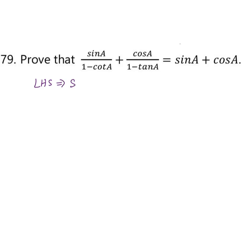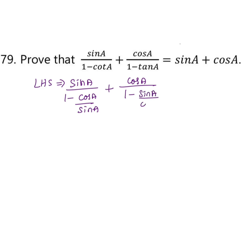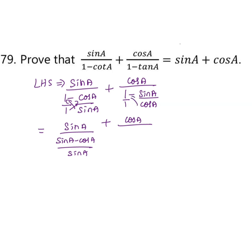LHS equals sin A divided by (1 minus cot A). We can write cot A as cos A divided by sin A, then plus cos A divided by (1 minus tan A), where tan A can be written as sin A divided by cos A. Taking LCM and cross multiplying, it becomes sin A minus cos A divided by sin A for the first term, and cos A minus sin A divided by cos A for the second term.